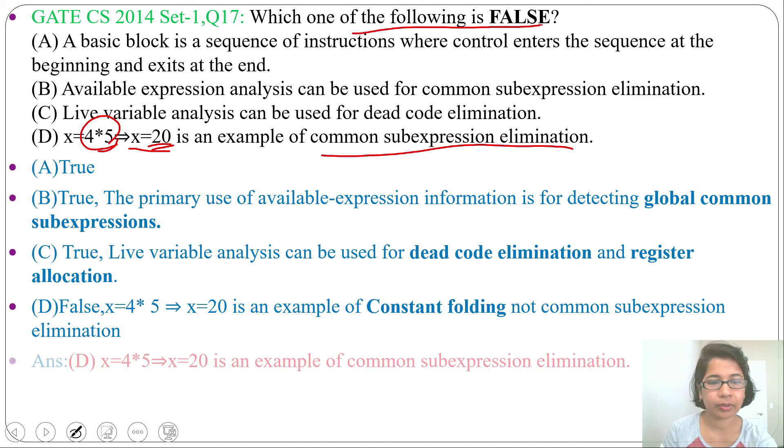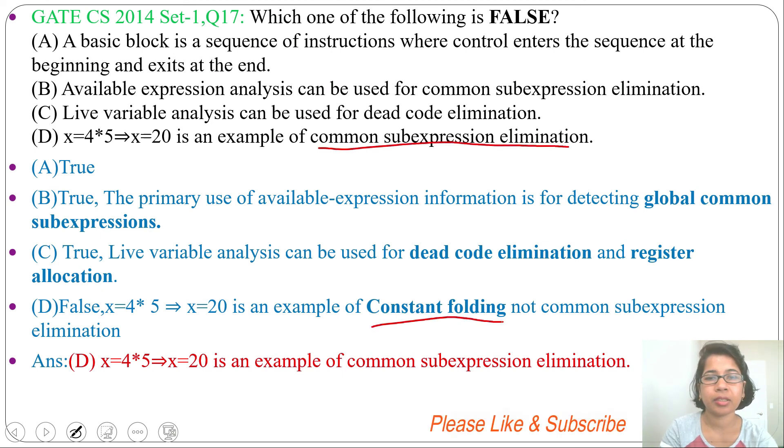I already discussed control flow graph where we used basic block, available expression, live variable analysis, and code optimization where I discussed common subexpression elimination and constant folding. Just go through the lecture. You can easily solve this question. If this lecture is helpful for you, please like and subscribe.